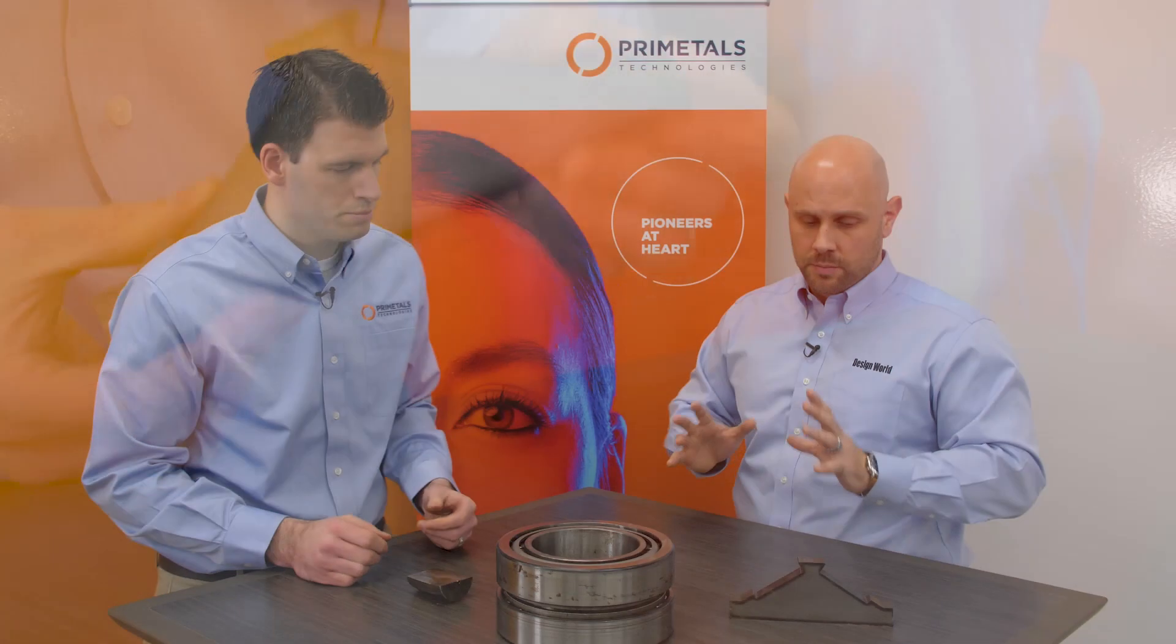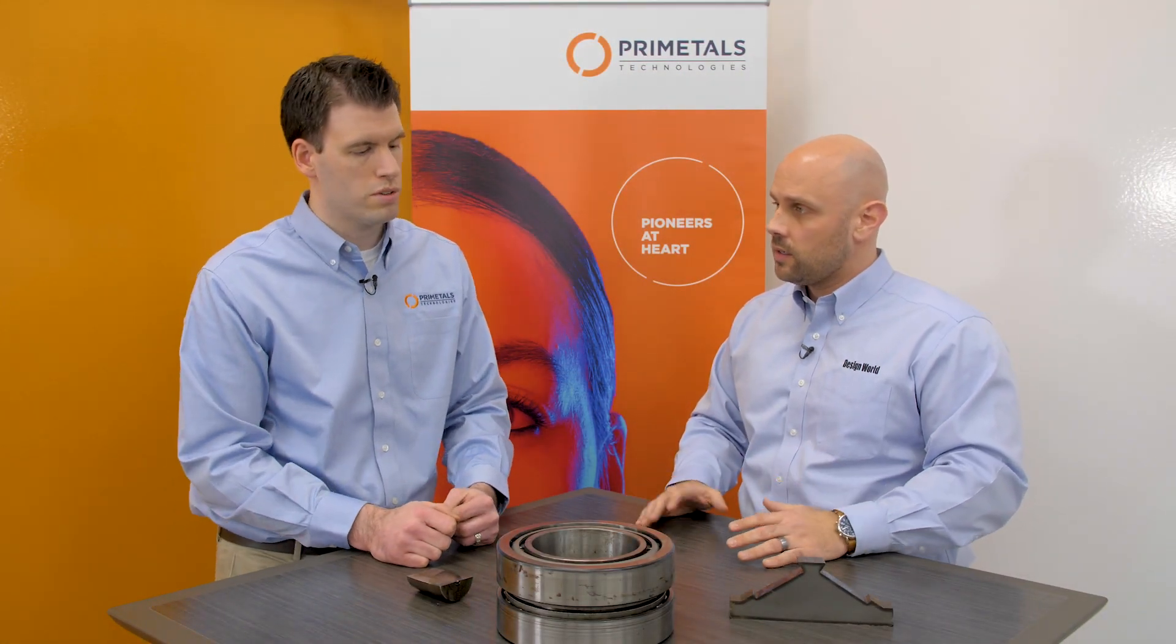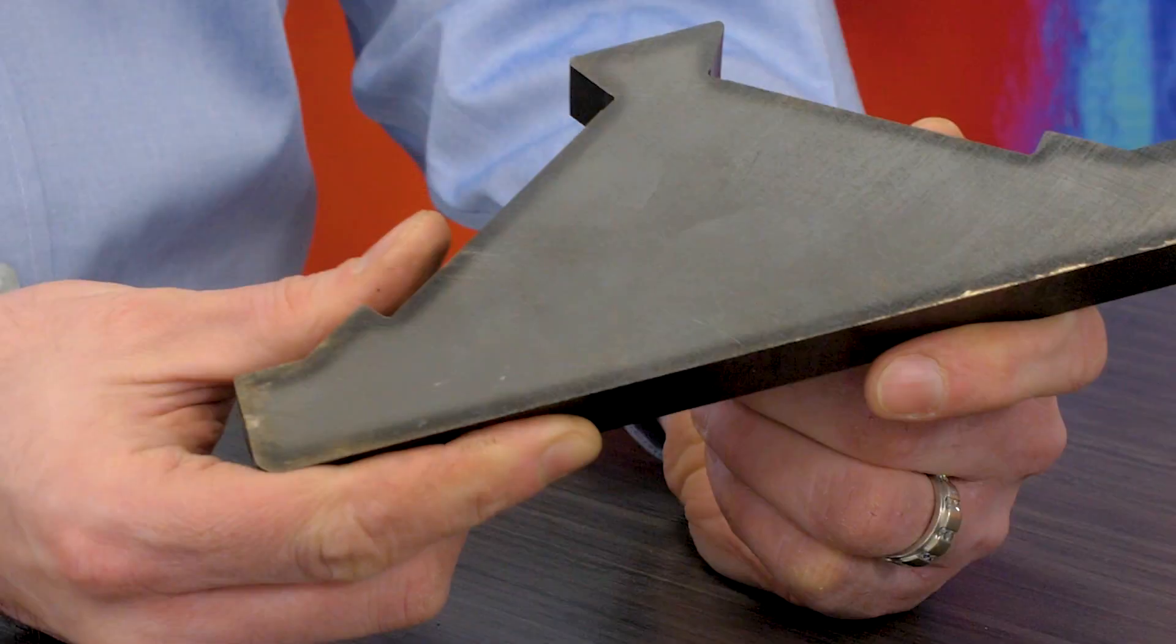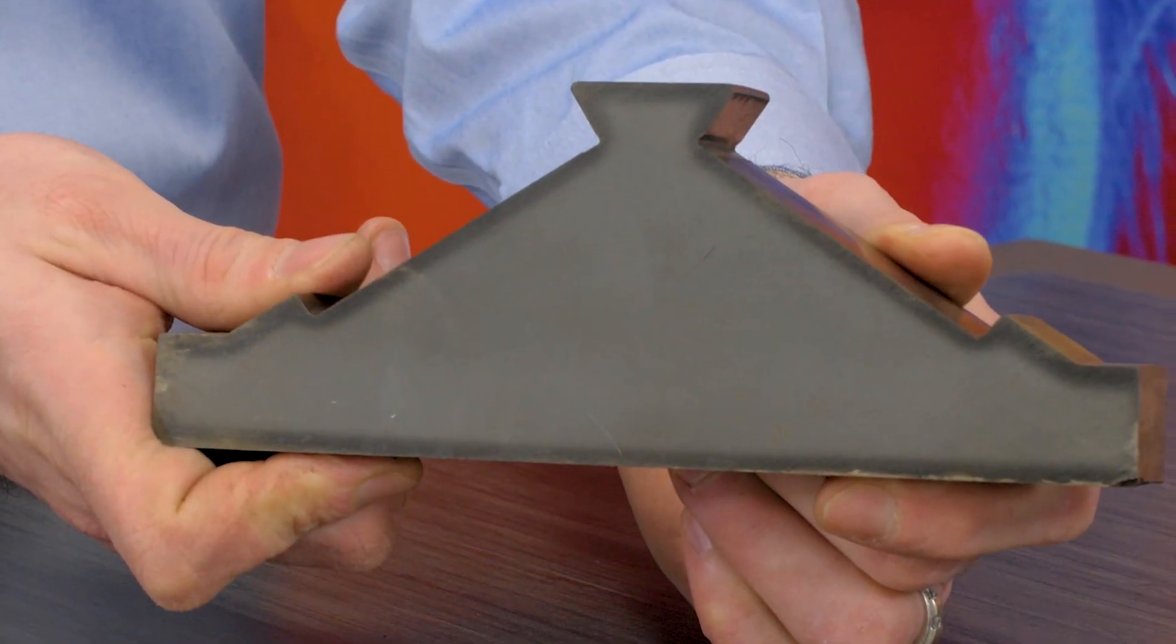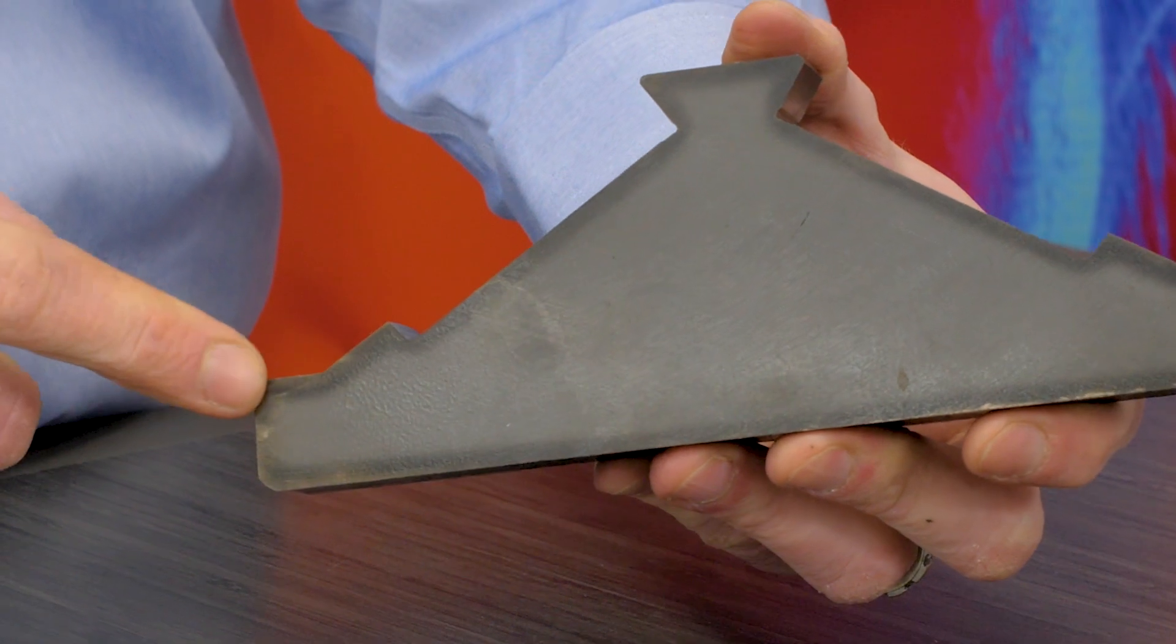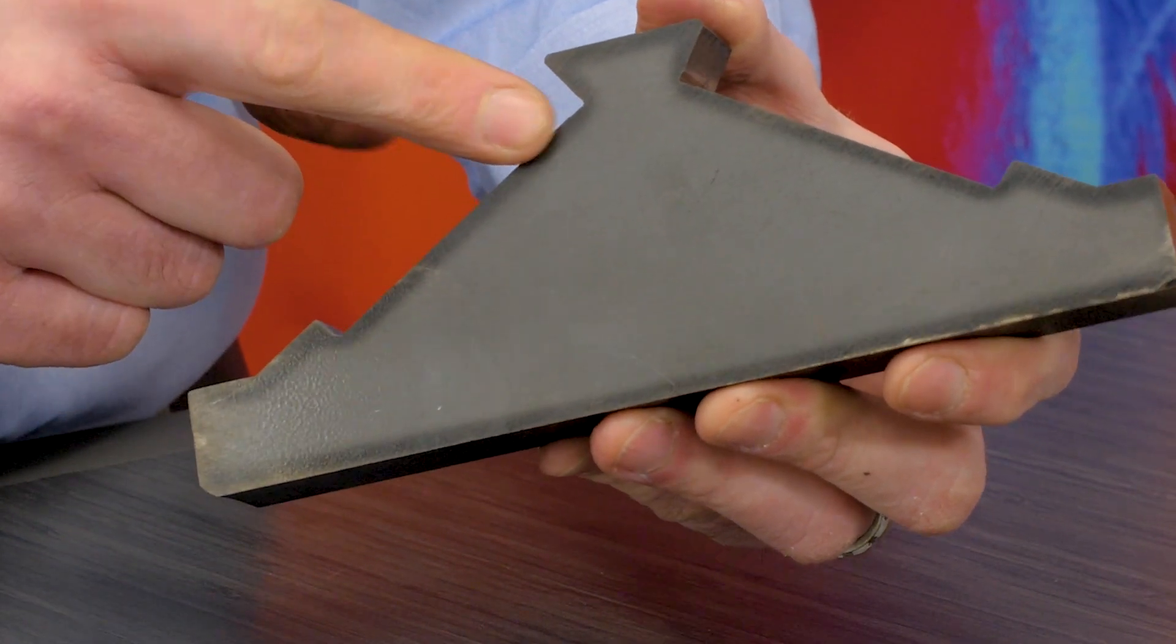And so, John, what's the process like for case carburizing? It's a number of different heat treat processes. They stick it in an atmosphere, they do a carburizing process, where they add the carbon into the metal, and that's what gives it its depth.